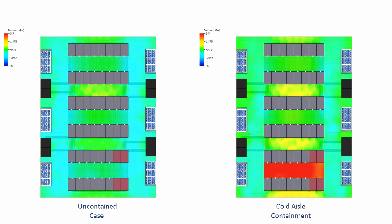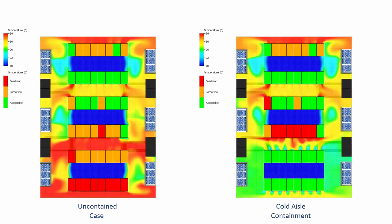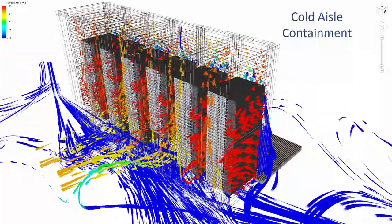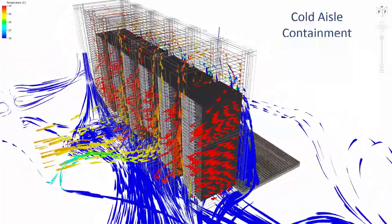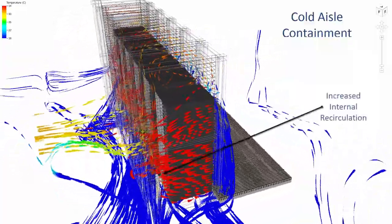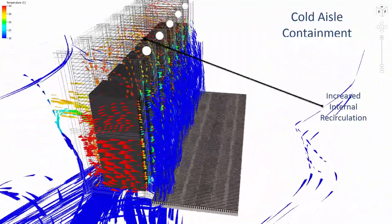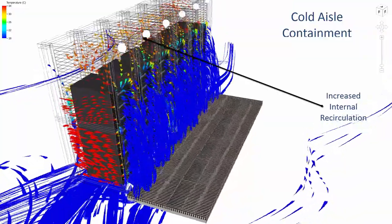As a result, exhaust air is pushed back into the adjacent aisles, thereby increasing the internal recirculation within the cabinets. Recirculating exhaust air travels towards the equipment inlets, thereby increasing the inlet air temperature. The combination of these issues mean that the cooling capacity of the air supplied to the central aisle has been reduced. A possible solution for the thermal issues in the contained case could be to introduce blanking inside the cabinets. This will prevent the internal recirculating flow from returning to the equipment inlets.